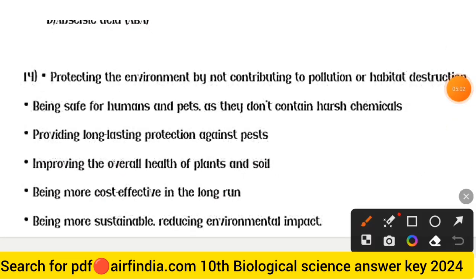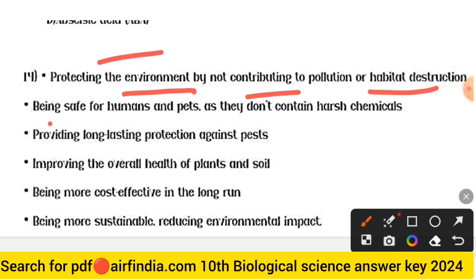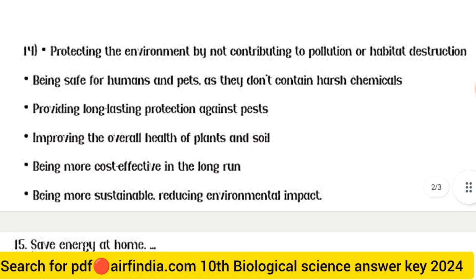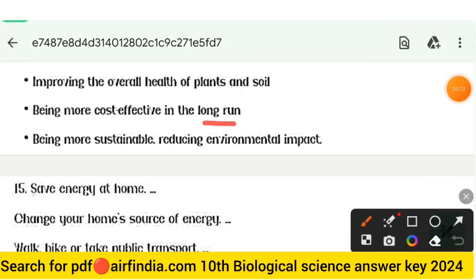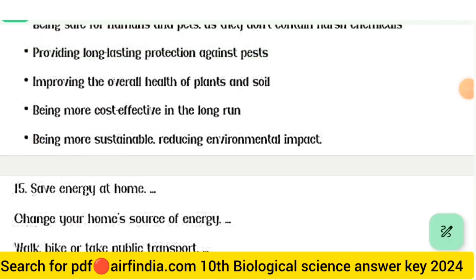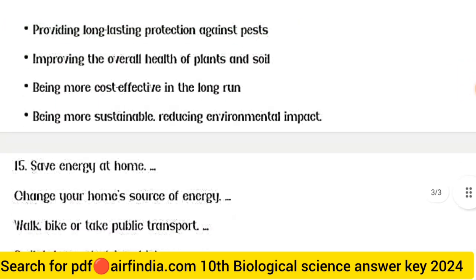Question 14 answer: Eco-friendly pest control methods include protecting the environment by not contributing to pollution or habitat destruction, being safe for humans and pets as they don't contain harsh chemicals, providing long-lasting protection against pests, improving overall health of plants and soil, being more cost-effective in the long run, and being more sustainable by reducing environmental impact.